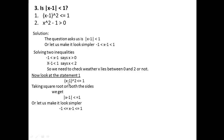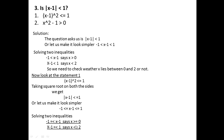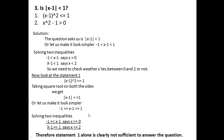Looking at statement one: (x - 1)² ≤ 1. Taking square root on both sides gives |x - 1| ≤ 1, which means x - 1 ≤ 1 and x - 1 ≥ -1, so x ≥ 0 and x ≤ 2. Now x can lie between 0 and 2 and can also take the value 0 or 2. So I cannot determine whether x strictly lies between 0 and 2. Statement one alone is clearly not sufficient.